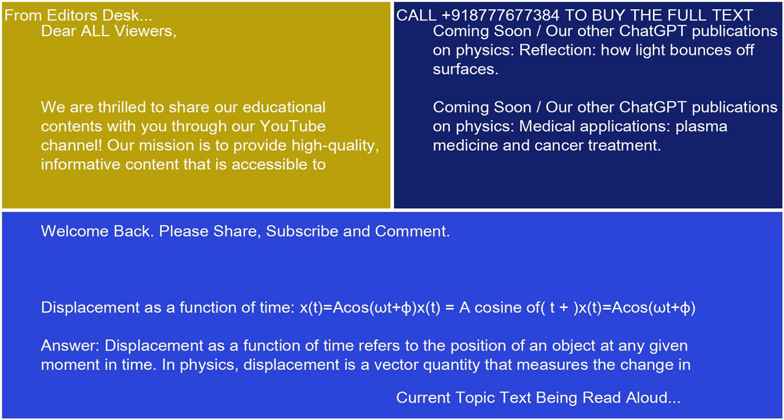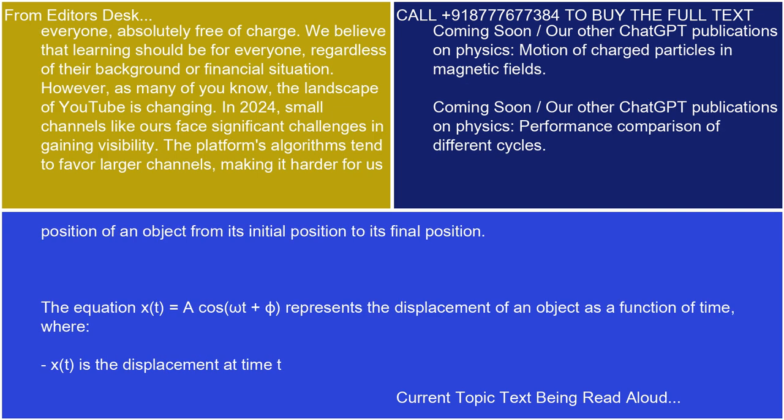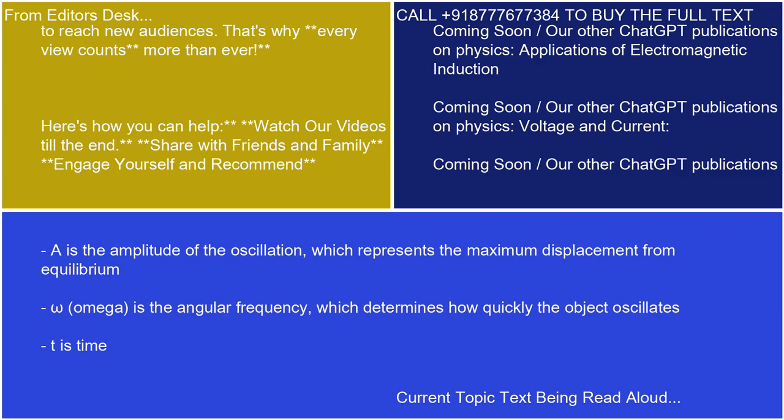Answer. Displacement as a function of time refers to the position of an object at any given moment in time. In physics, displacement is a vector quantity that measures the change in position of an object from its initial position to its final position. The equation x(t) equals A cos(omega t plus phi) represents the displacement of an object as a function of time, where x(t) is the displacement at time t. A is the amplitude of the oscillation, which represents the maximum displacement from equilibrium.